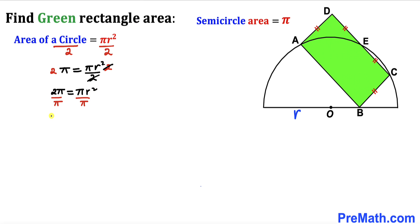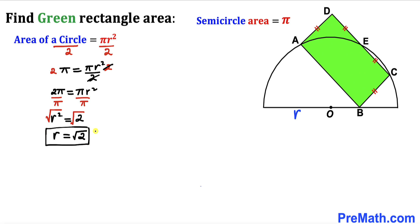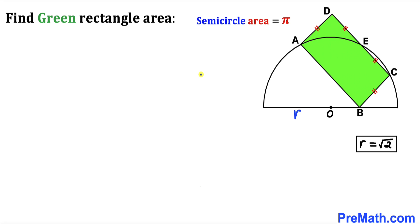Dividing both sides by pi, r squared equals 2. Taking the square root of both sides, our radius r turns out to be the square root of 2.